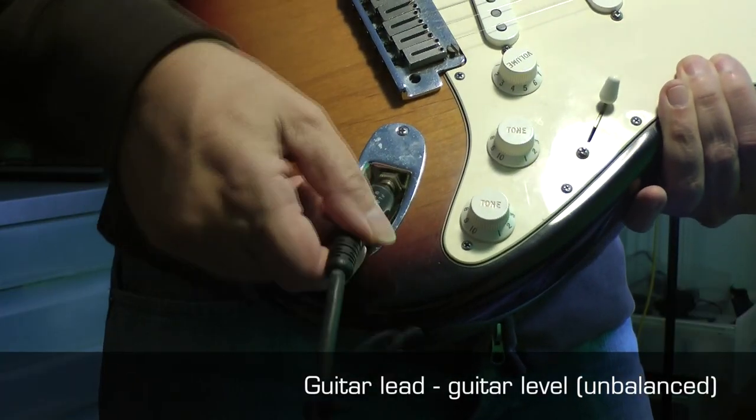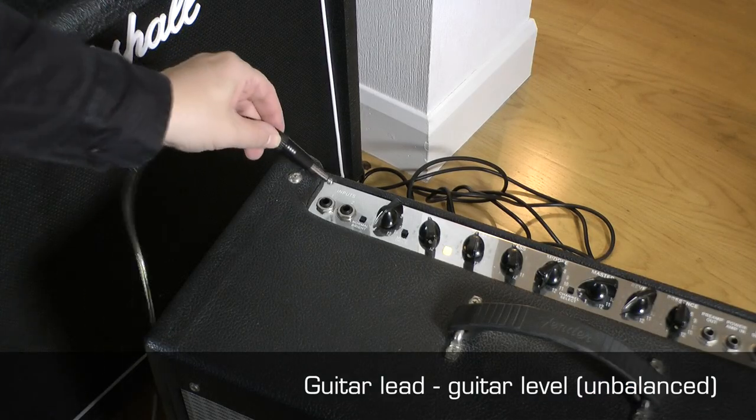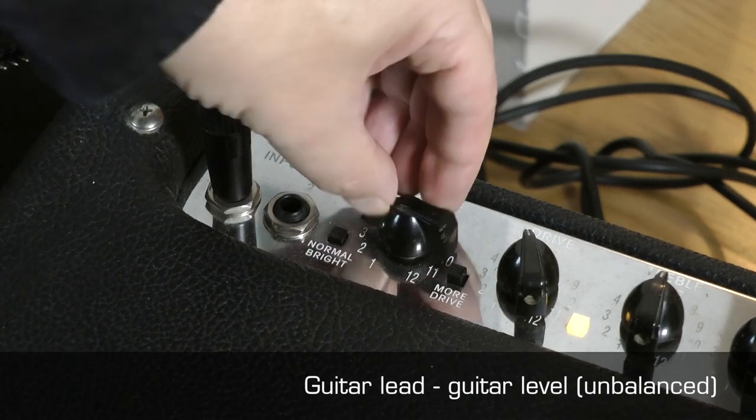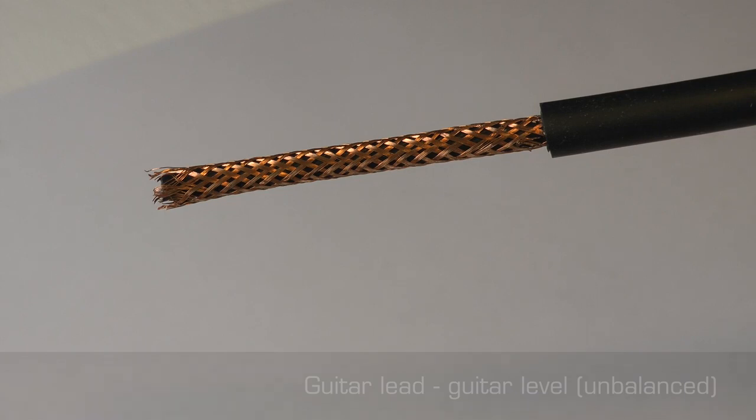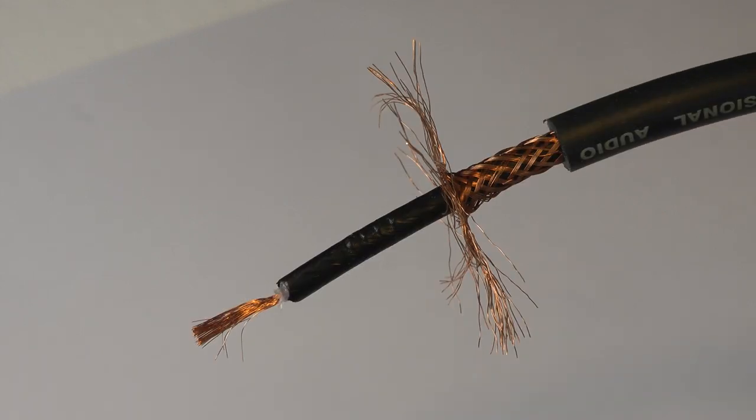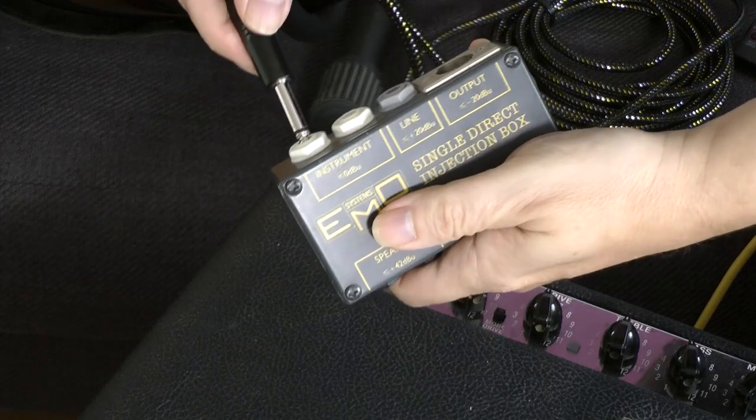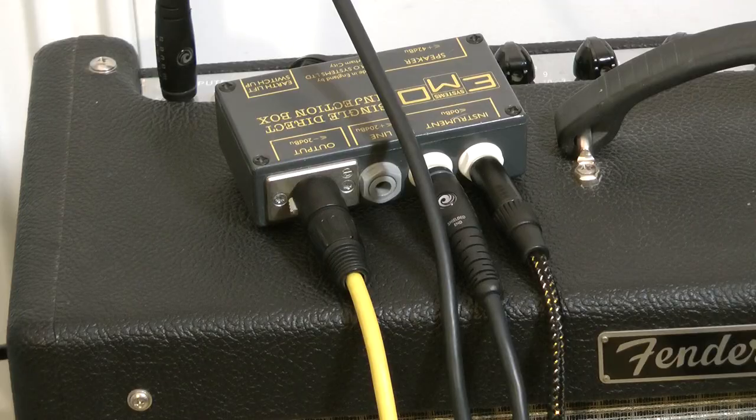This is a guitar instrument lead, guitar-level electrical signal unbalanced, male-to-male mono quarter-inch jack. But the cable is different in this lead from the instrument jack-to-jack lead. It's used to connect a guitar to an amplifier or a DI box.